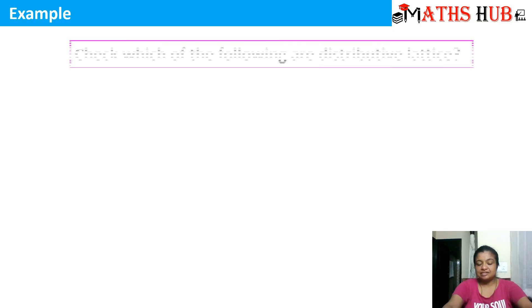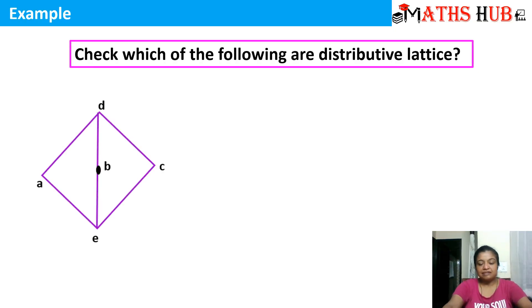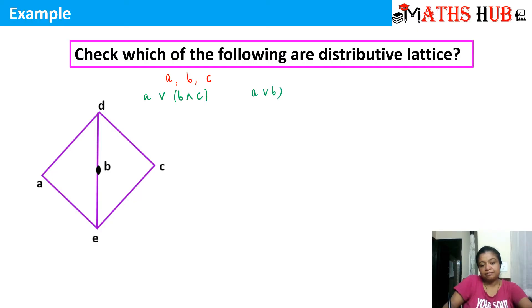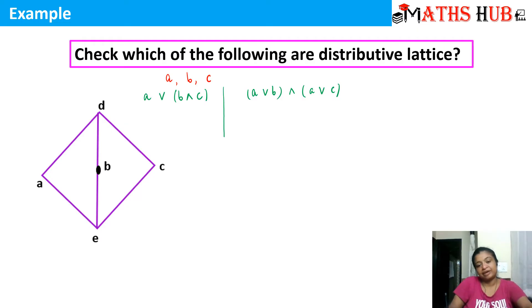Let's take the first example. You are given this lattice and we need to check whether it is distributive or not. Let us pick up the first set of elements A, B, and C. For the distributive law, A join (B meet C) should be equal to (A join B) meet (A join C). Let's calculate the left-hand side and the right-hand side separately and then match the two answers.